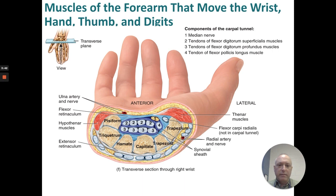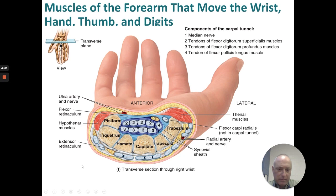Looking at a transverse section of the wrist, we can see the carpal tunnel. The carpal tunnel holds the median nerve, the tendons of the flexor digitorum superficialis, the tendons of the flexor digitorum profundus, and the tendons of the flexor pollicis longus.